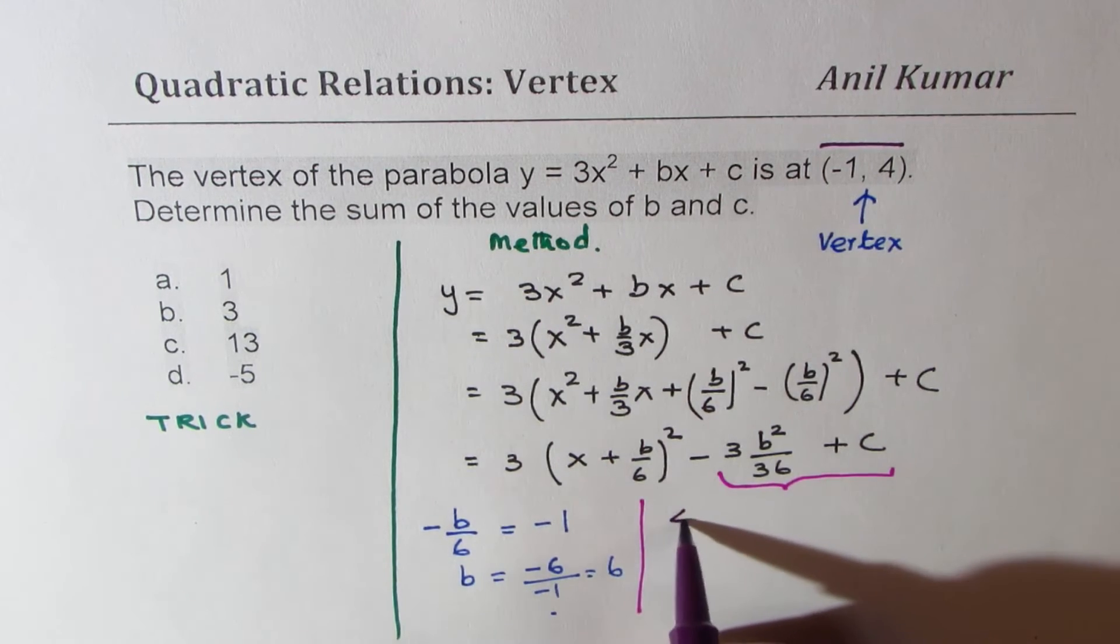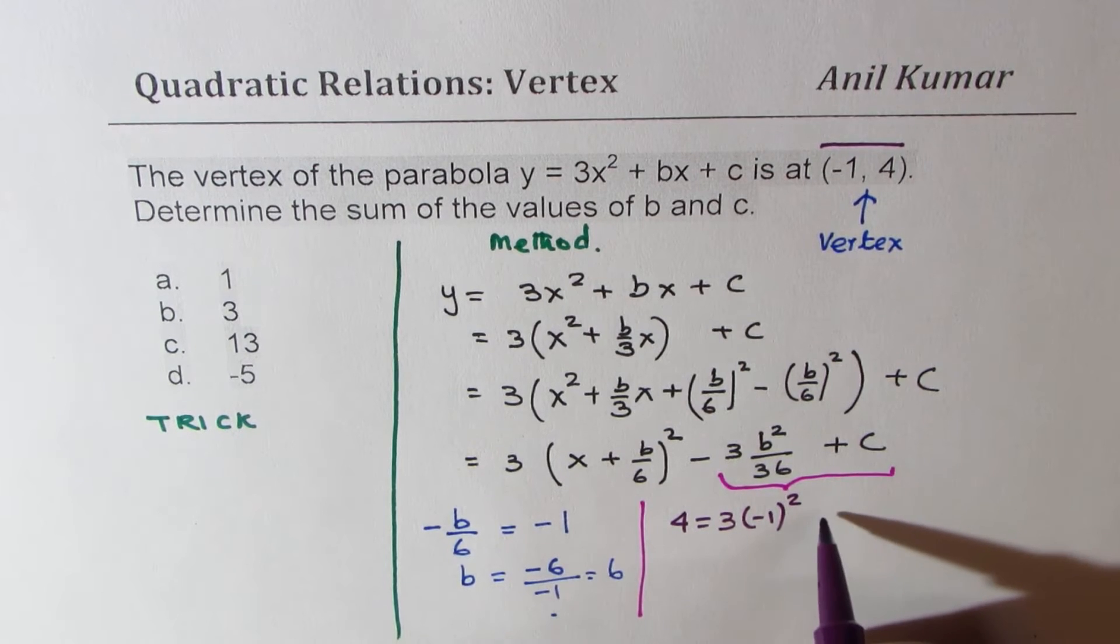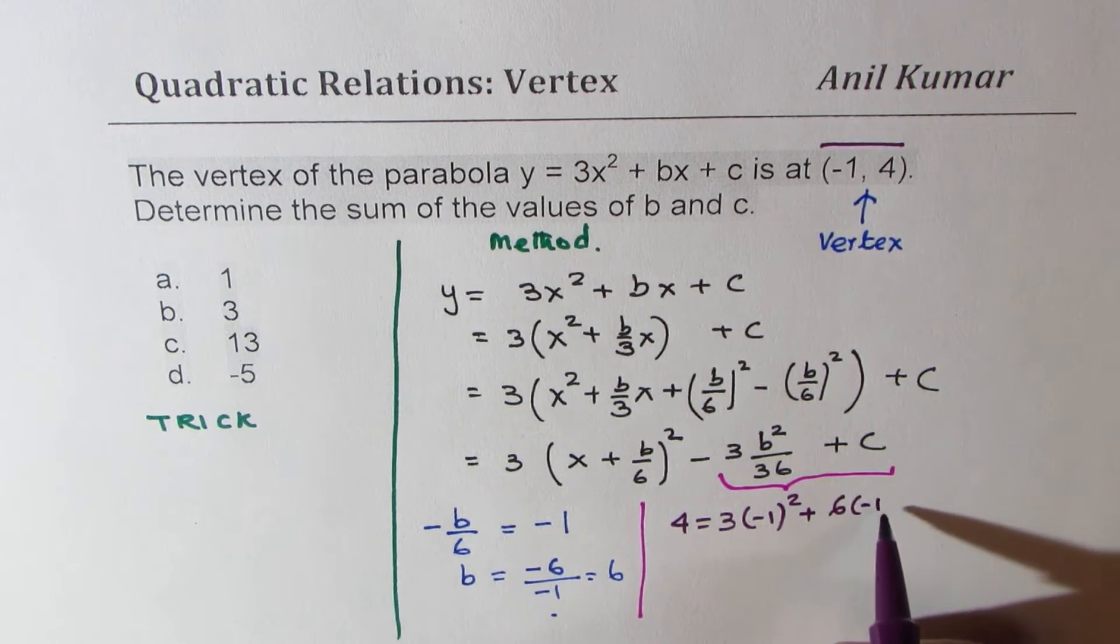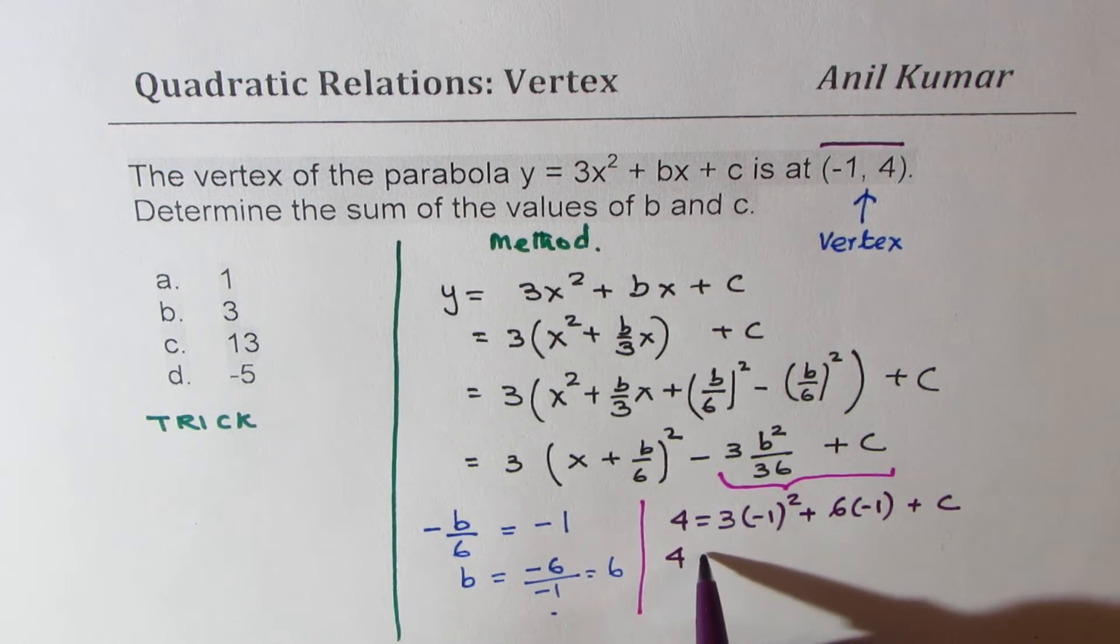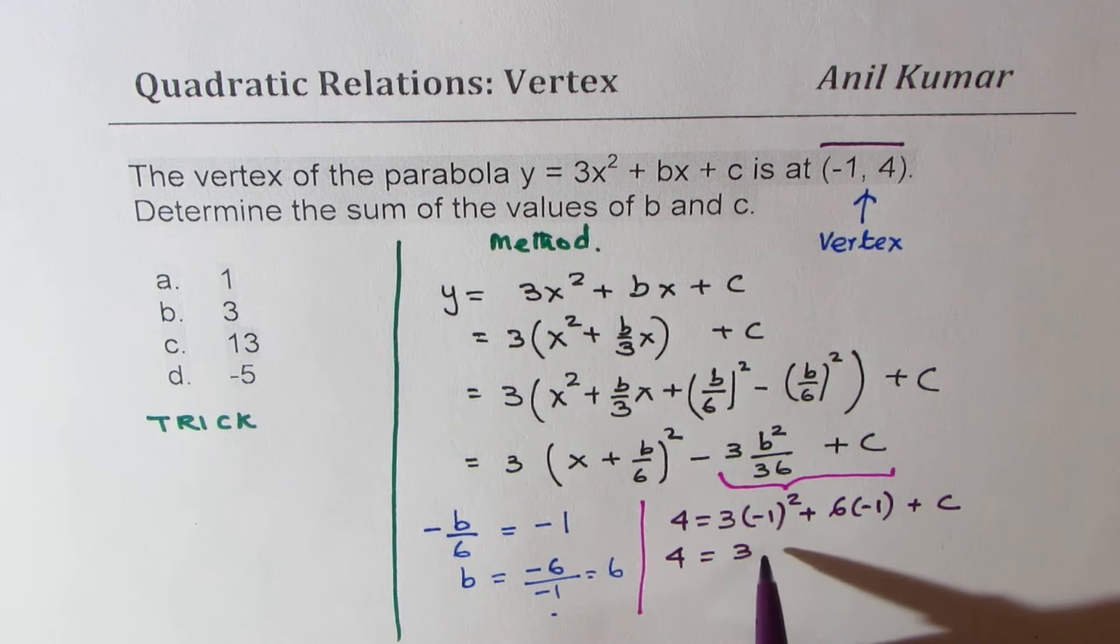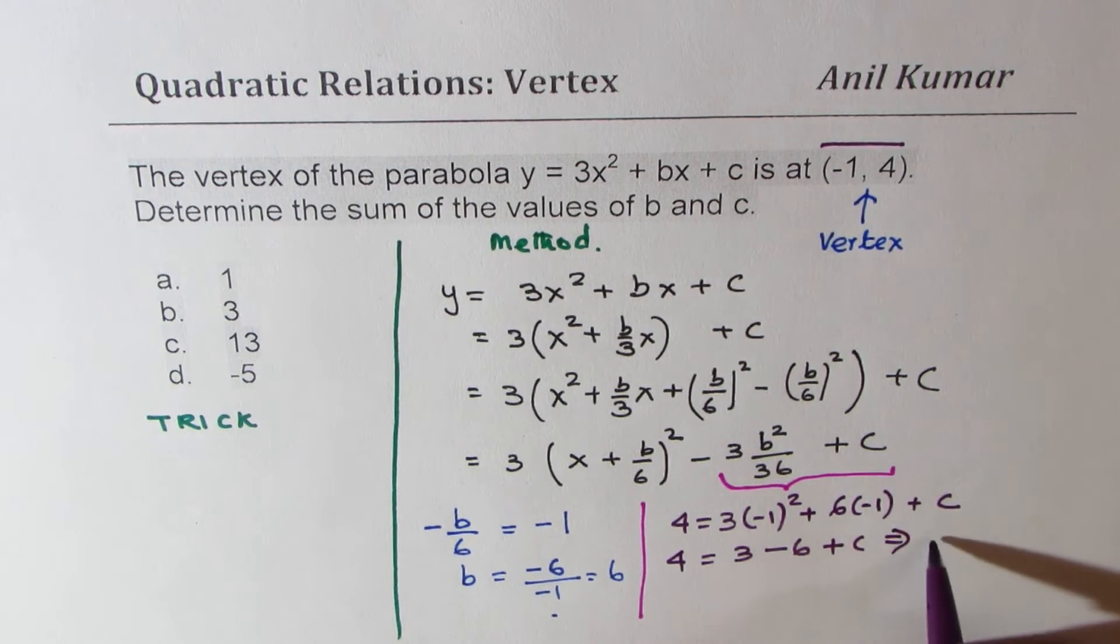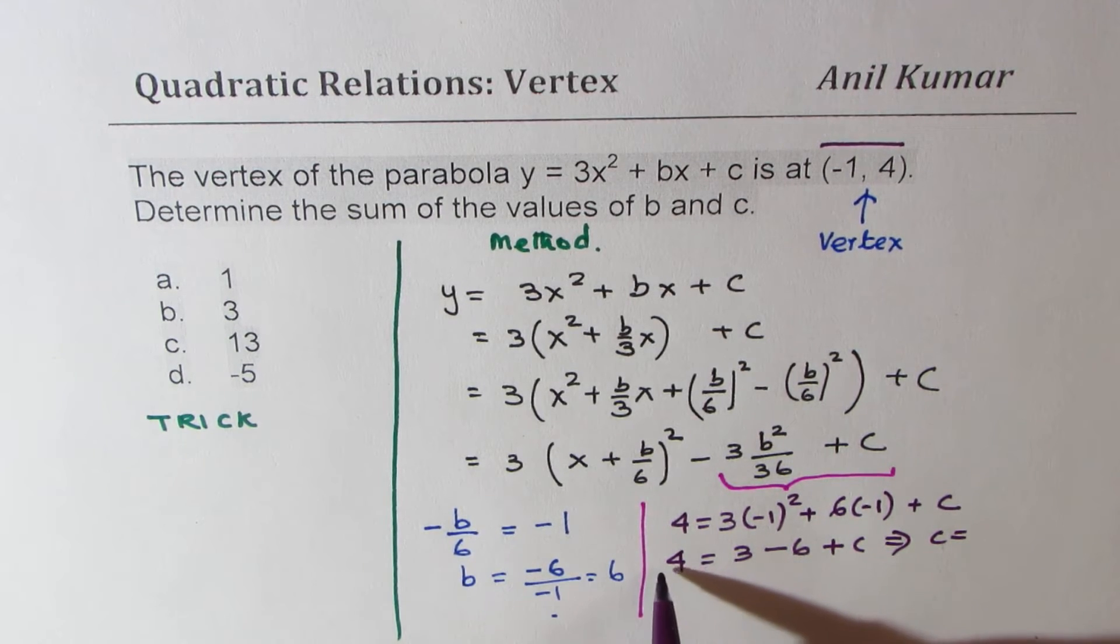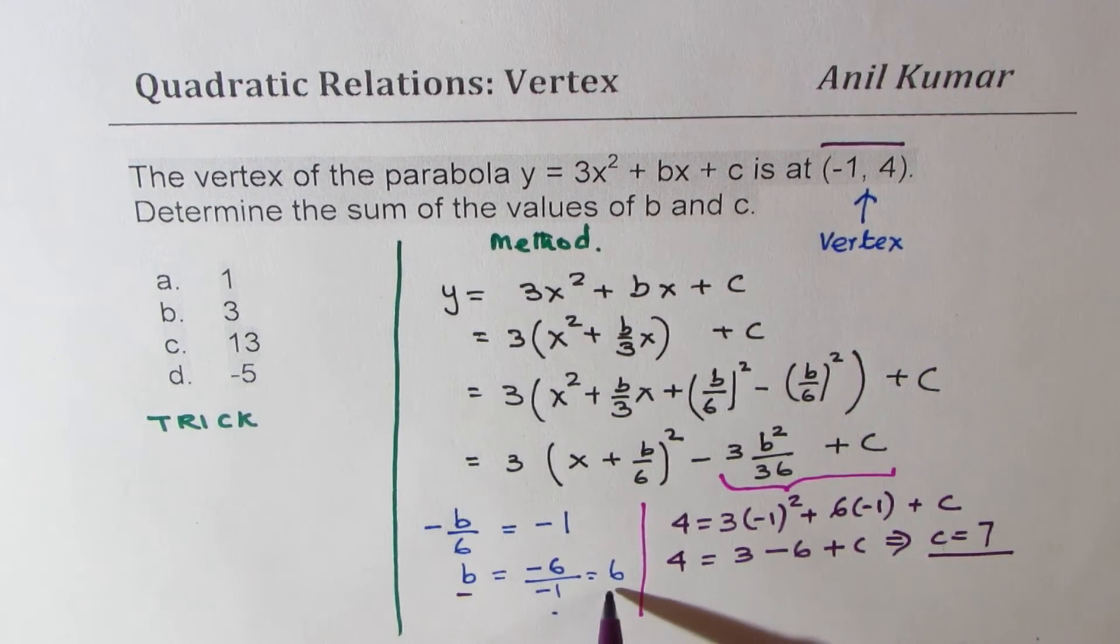So we write 4 for y equals 3 times minus 1 squared plus b we know is 6 times minus 1 plus c. So that gives you 4 and this value is 3. Here we have minus 6 plus c. Now that gives you the value of c as equal to 4 minus minus 3, which is 7. So we get c as 7 and b as 6.